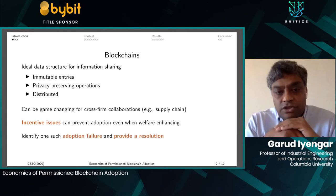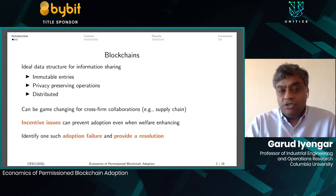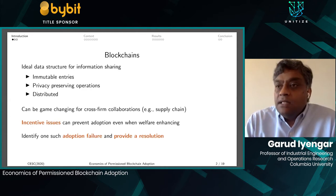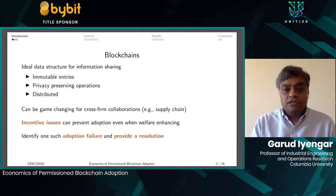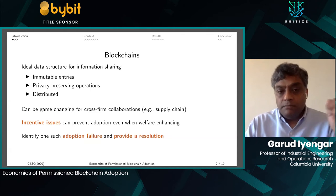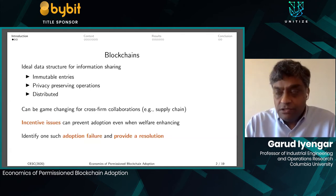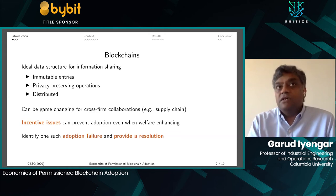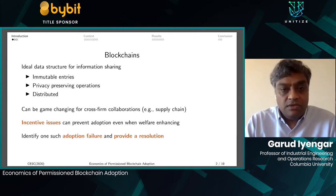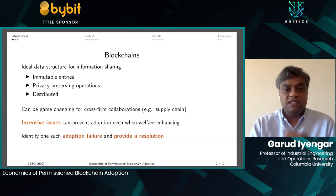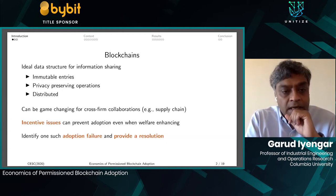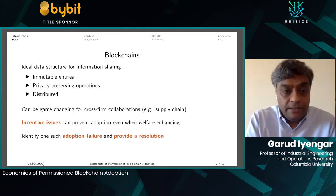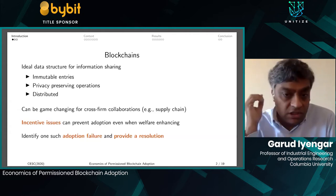Blockchains are an ideal data structure for information sharing. They provide immutable entries, which means that there is an audit trail for everything that has been done. In particular, permissioned blockchains are better because the entities providing the consensus are connected to physical entities, which means you can put a name to them. There are privacy-preserving operations on the data such that only certain parts — or only certain functions of the data — are visible. This can be very useful for setting up reputation metrics and ensuring participants only see data relevant to them. It's also distributed, so from a security perspective, it cannot be attacked and brought down. For all these reasons, blockchains can be game-changing for cross-firm collaborations.